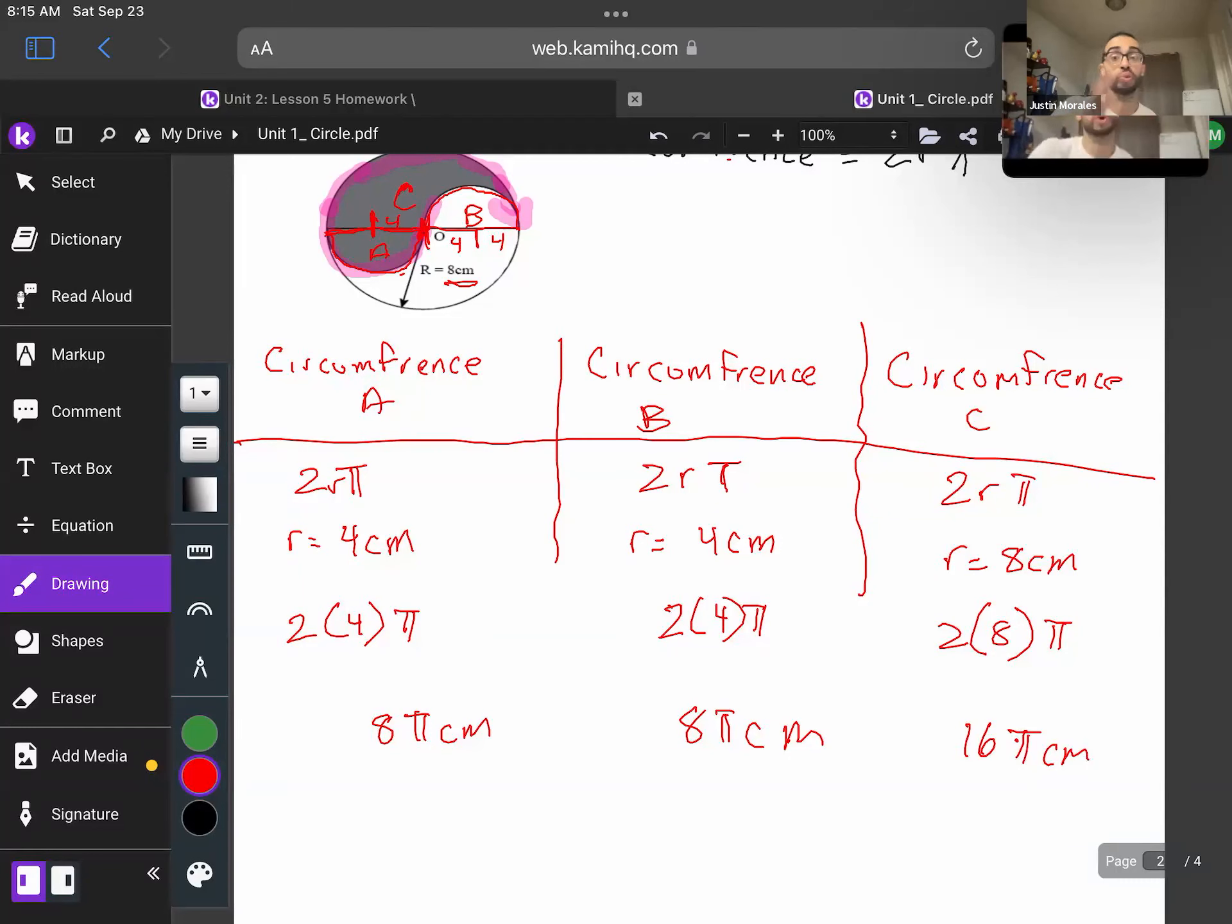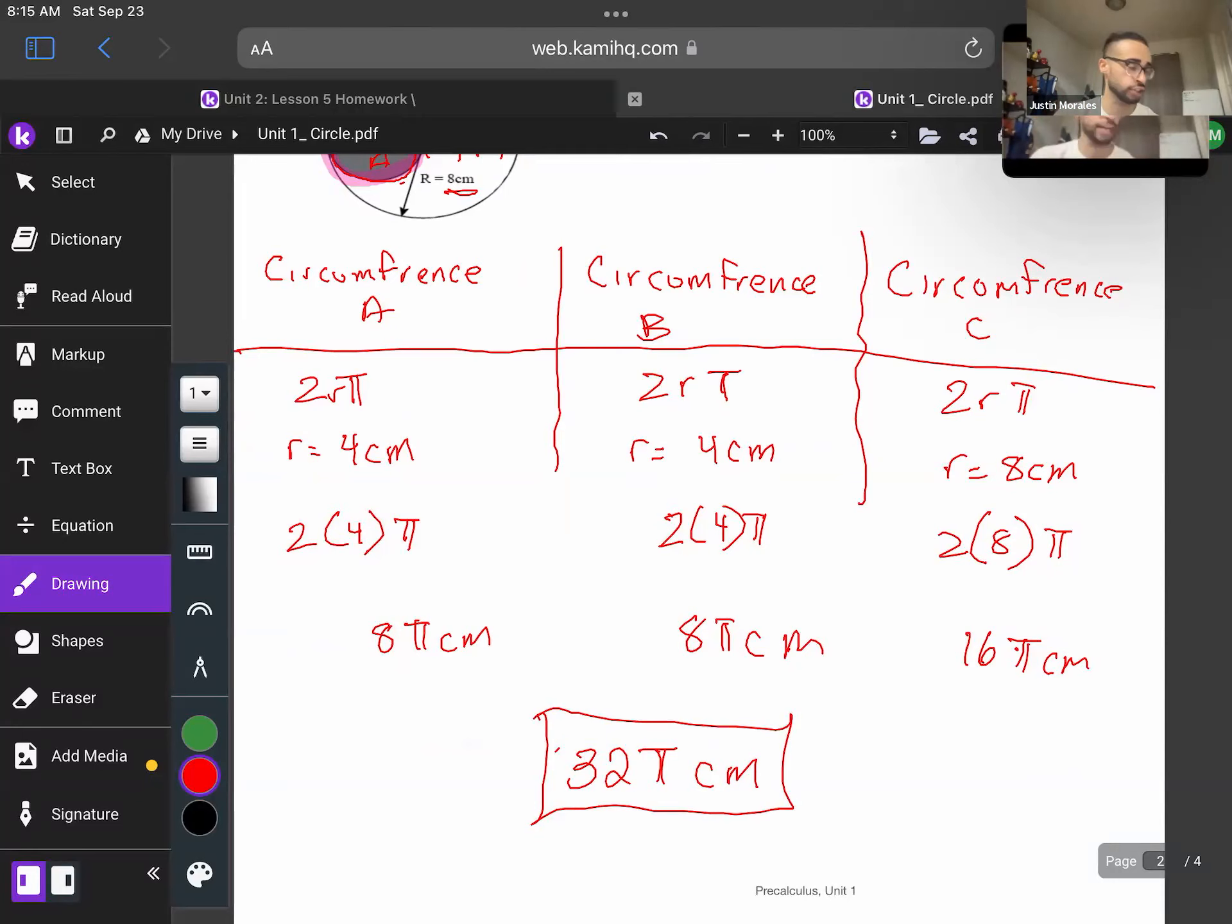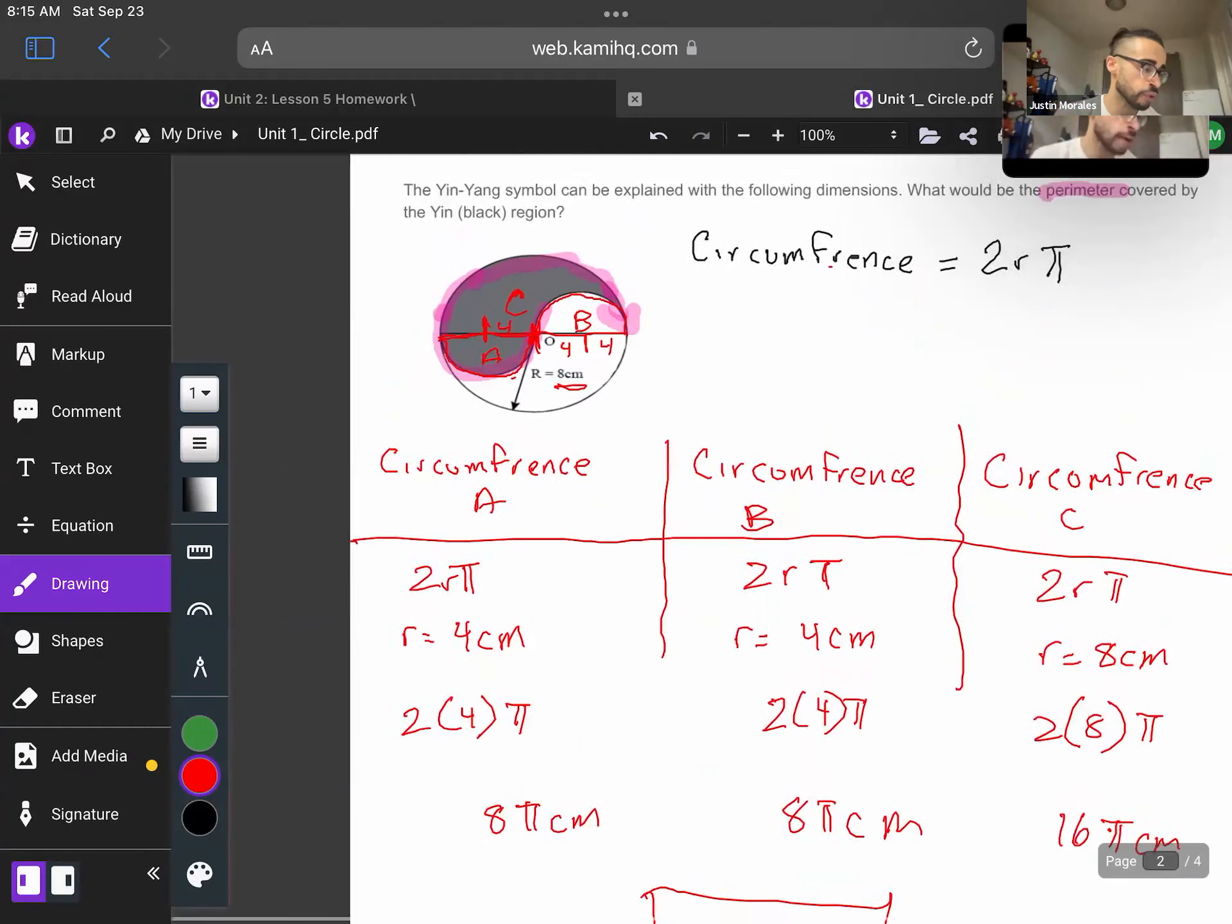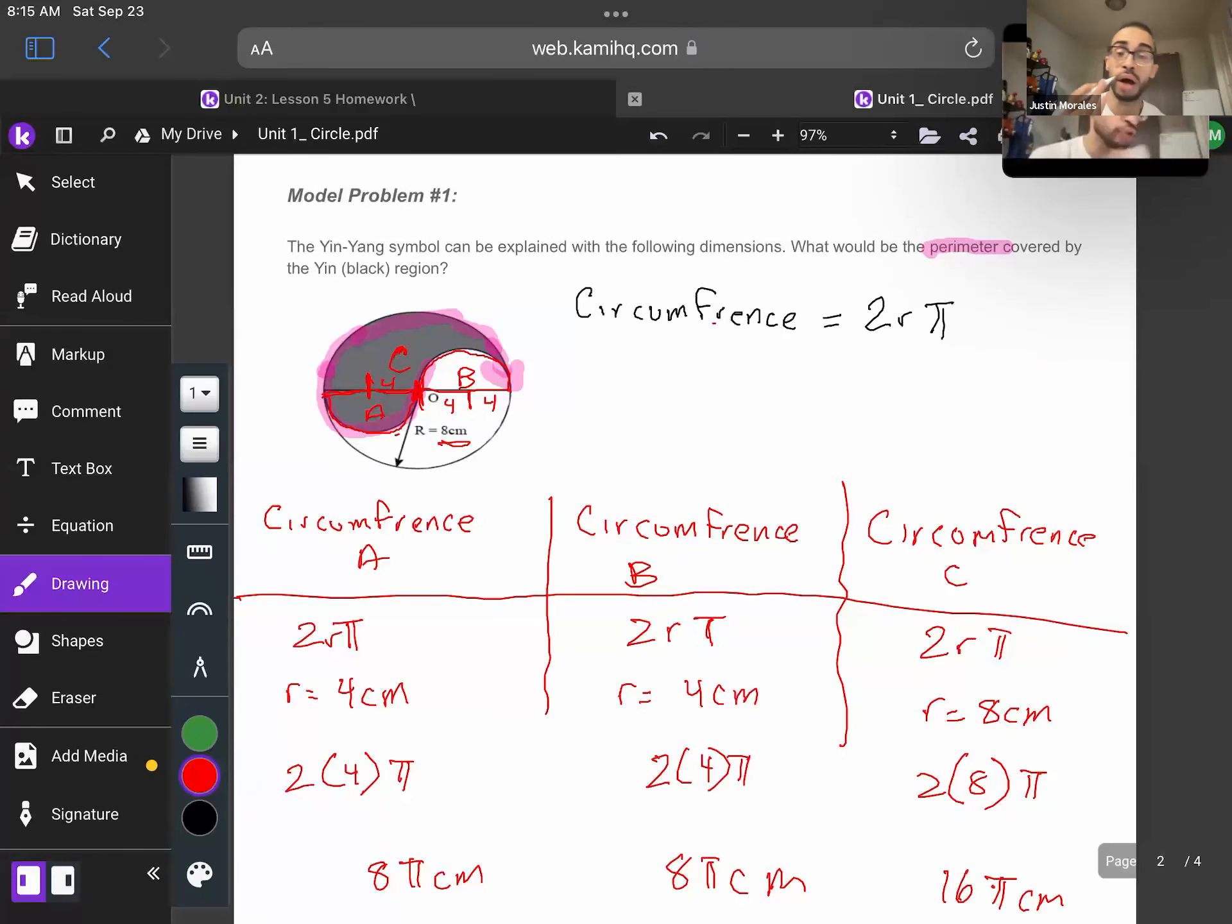So if I add them all together, because once again, that is what the question was asking for. It wasn't just asking for A, B, and C. It was asking for the entire black region. We will get 32π centimeters. Once again, I'm using my units to ensure that I'm meeting my bare minimum effort standards. So just to recap, because they were asking for perimeter, I was able to utilize the circumference formula.